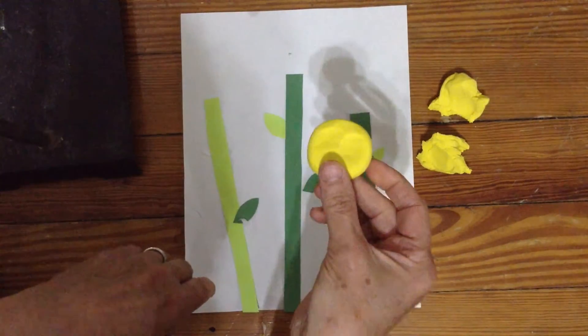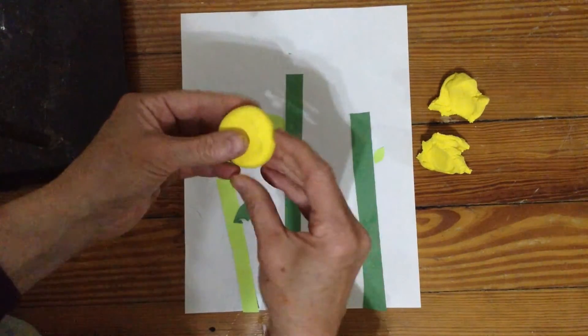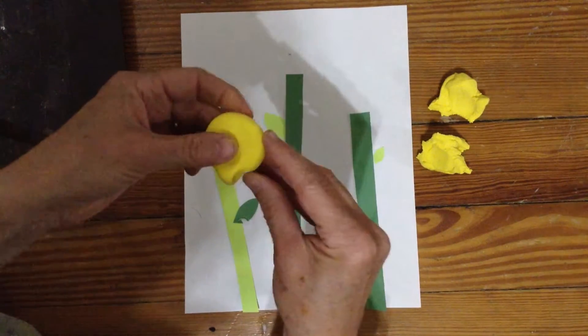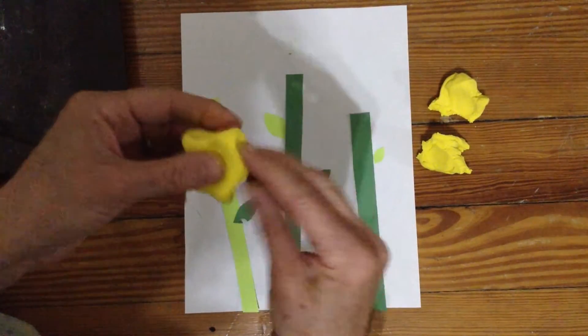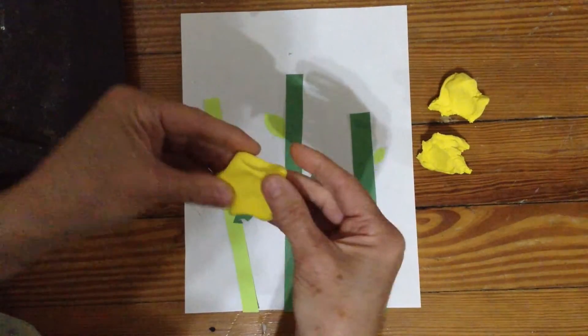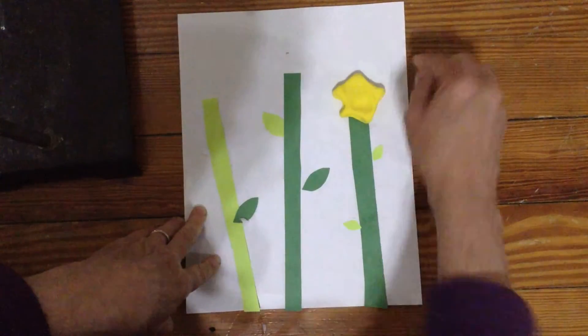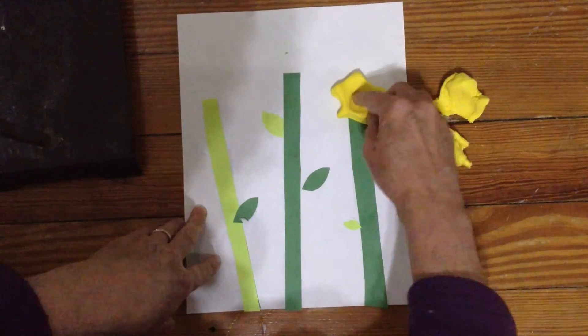You want to keep it fat, not too skinny. And I'm gonna pinch the sides to make my first flower. Turn and pinch, turn and pinch. And there I have one flower. And I can put it on top and press in the middle.